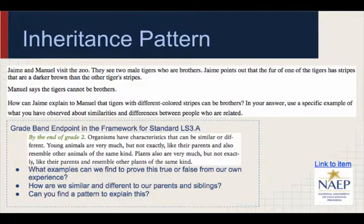Be sure to ask your students if they have any siblings. Do you look exactly like your siblings? Why not? Is it possible to be siblings but not look like twins? If this is true for humans, could the pattern be true for other animals? Can you think of any examples that fit this pattern? Students might have examples of their pets or a farm animal. Can anyone think of a way to explain this pattern to Jamie and Manuel in your own words?